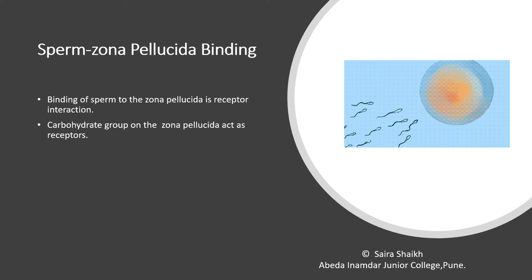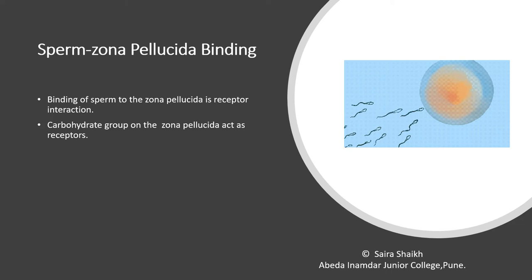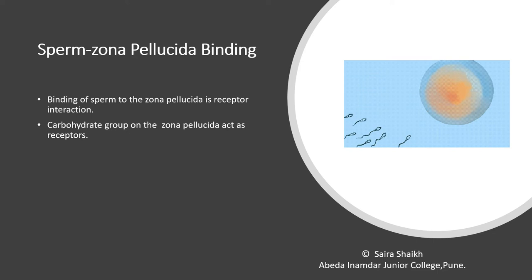During insemination, millions of sperms are introduced into the female tract. But the sperm which is highly active and fast will reach the zona pellucida of the secondary oocyte. The zona pellucida is the layer present around the plasma membrane of the secondary oocyte. The zona pellucida has receptors, which are present in the form of carbohydrate groups. The sperm binds with this group and forms a complex.